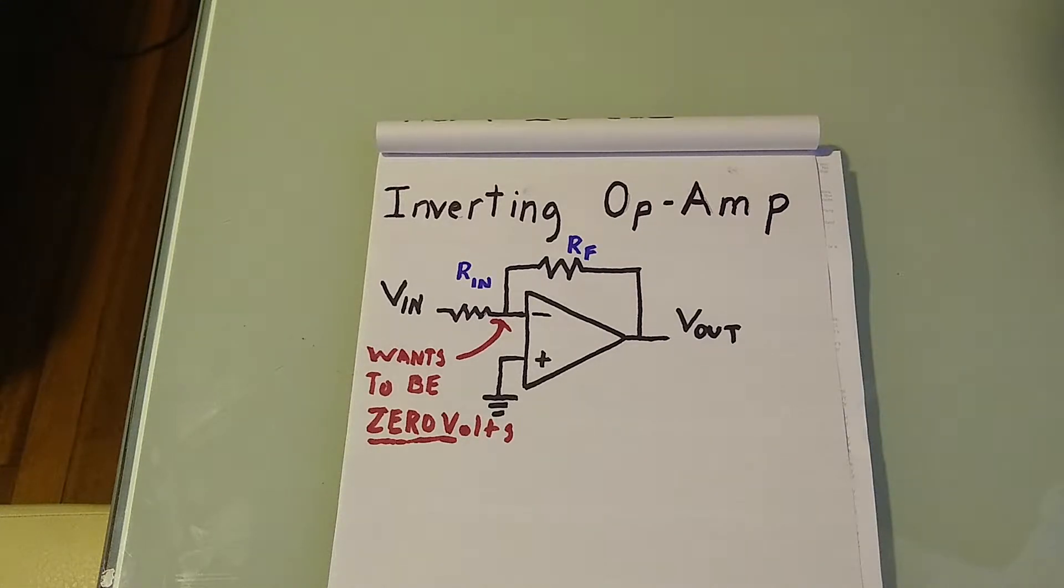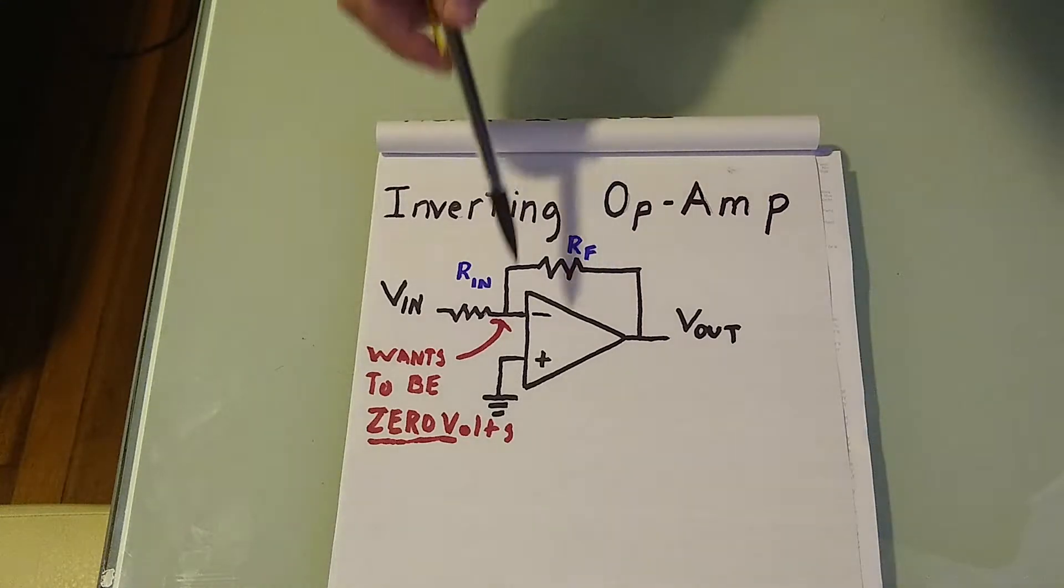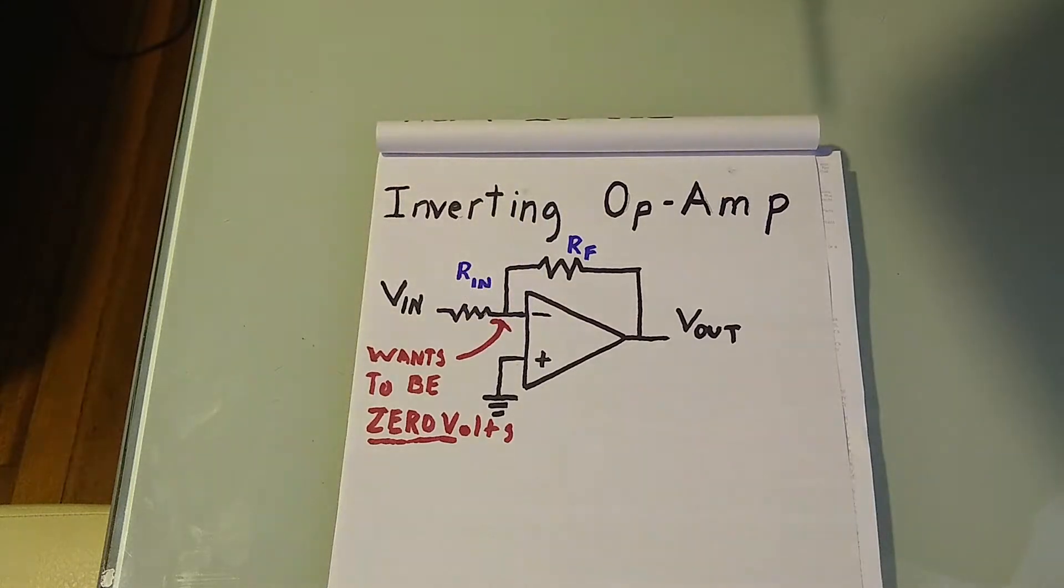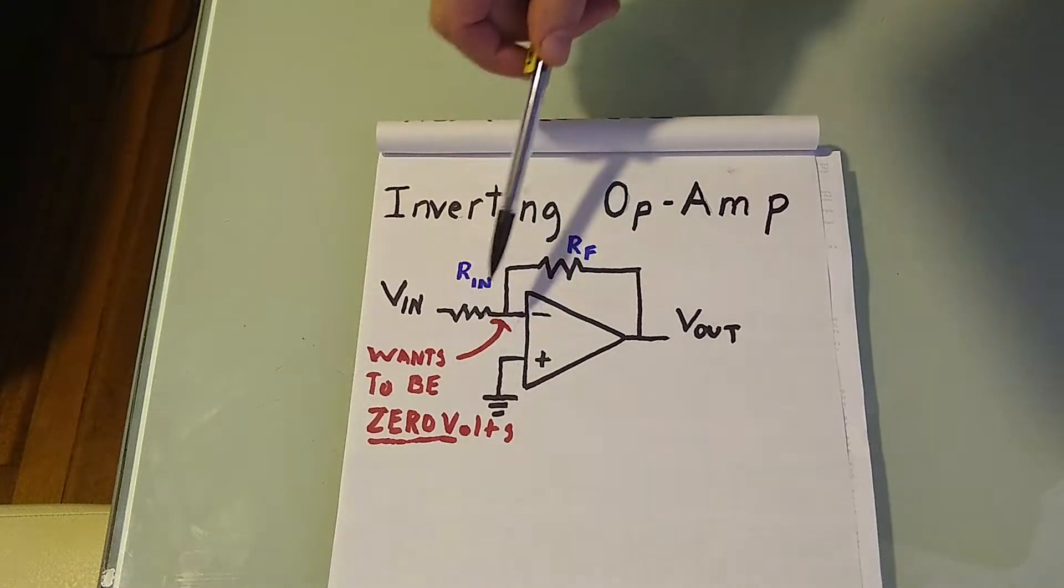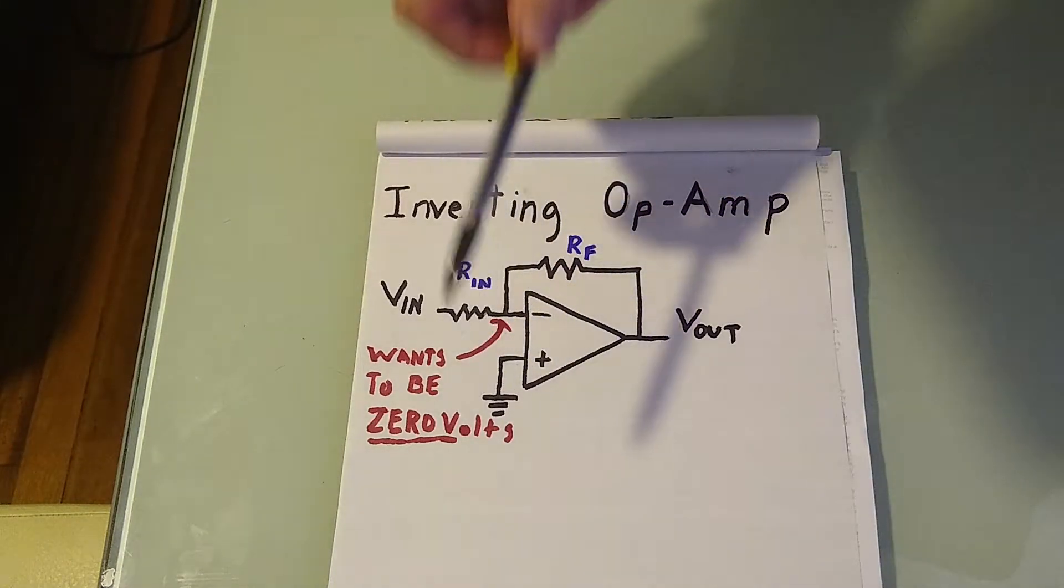Now, the positive and negative inputs of the op-amp always want to be equal. In this case, with the positive input grounded, it is equal to zero volts.